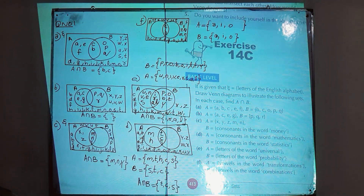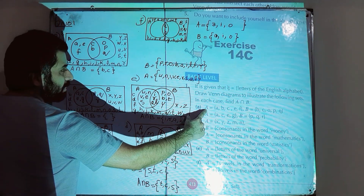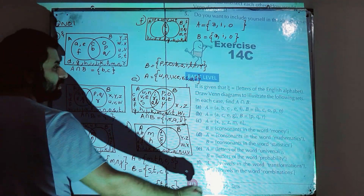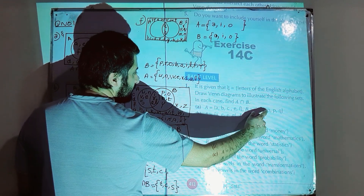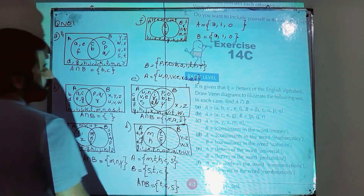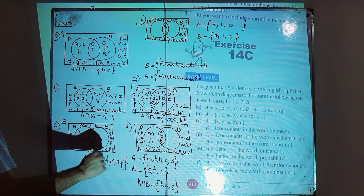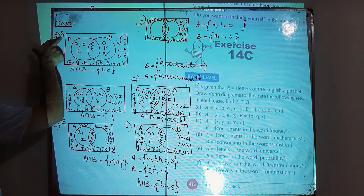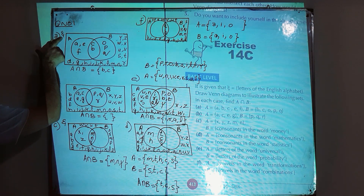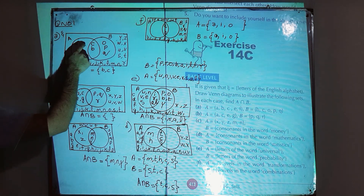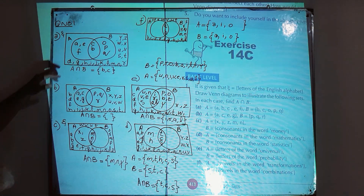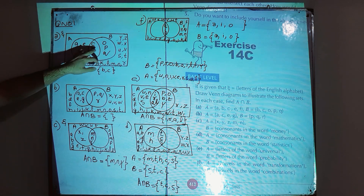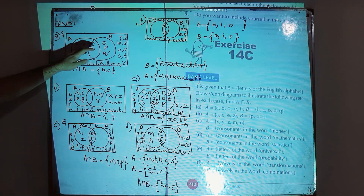Starting from part a, we have set A with elements a, b, c, e, f, and set B with elements b, c, o, p, q. As you know, a Venn diagram has a rectangle representing the universal set, while sets A and B are represented by circles. The overlapping part belongs to both A and B.